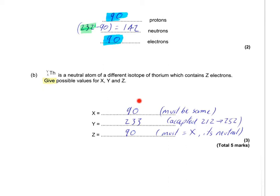Well, X and Z has to be the same. It's still thorium. That's defined by having a proton number of 90. Different isotopes still have the same proton number. So the number of protons and the number of electrons must still be 90.